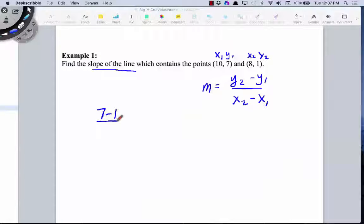We'll start off by saying 7 minus 1 divided by 10 minus 8. 7 minus 1 is 6, over 10 minus 8 is 2, the slope of that line is 3.